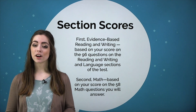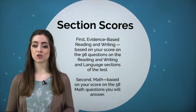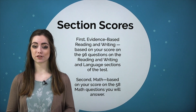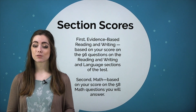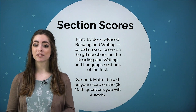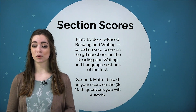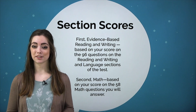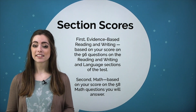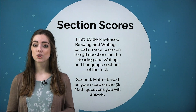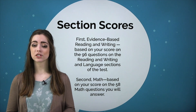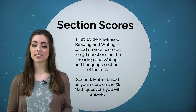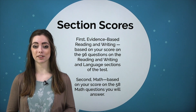A raw score is simply the total number of questions you got right on each section. These raw scores are then converted to scaled scores ranging from 200 to 800, and added together to give you a total score that ranges from 400 to 1600.